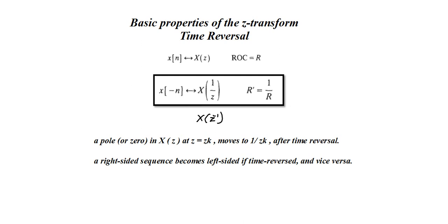Regarding the poles: for X(Z), if there is a pole at Z equal to Zk, then after time reversal the pole will move to a new location at 1/Zk. That covers the pole and zero behavior. Additionally, a right-handed sequence becomes a left-handed sequence when you perform this time reversal operation.